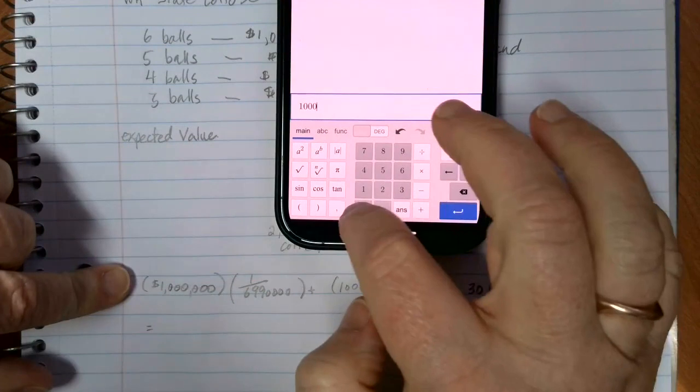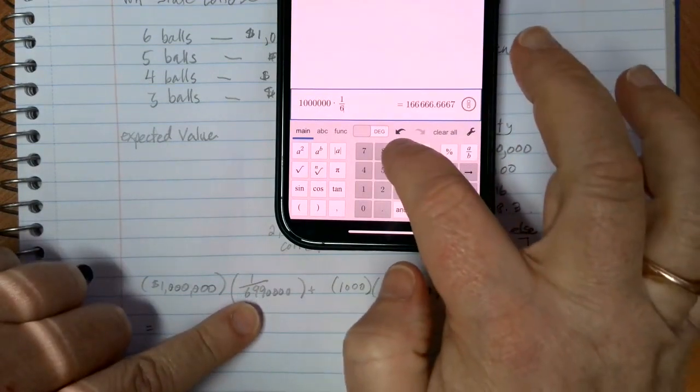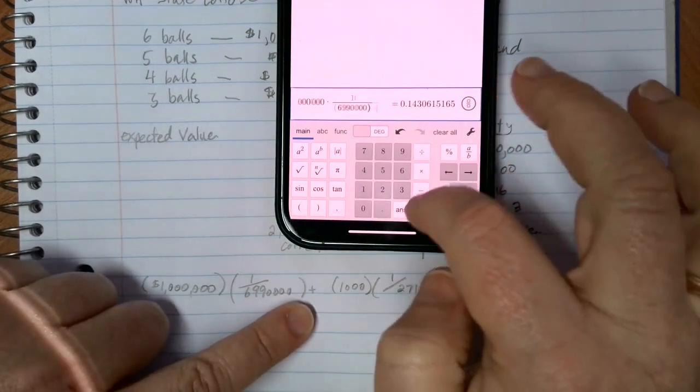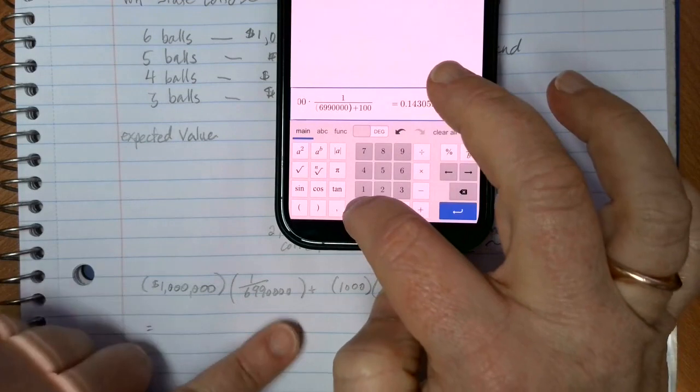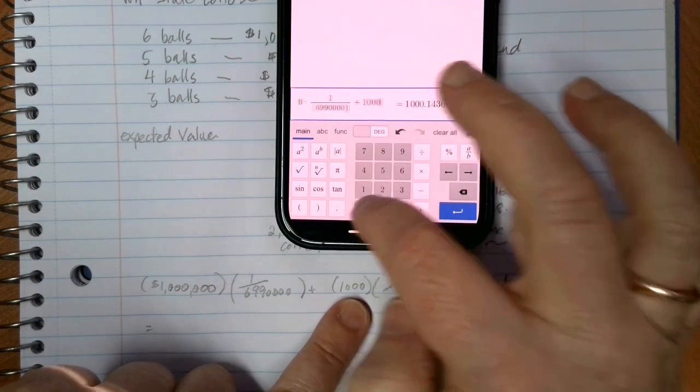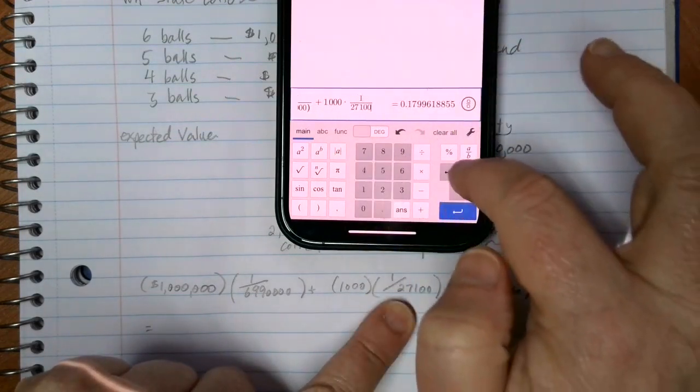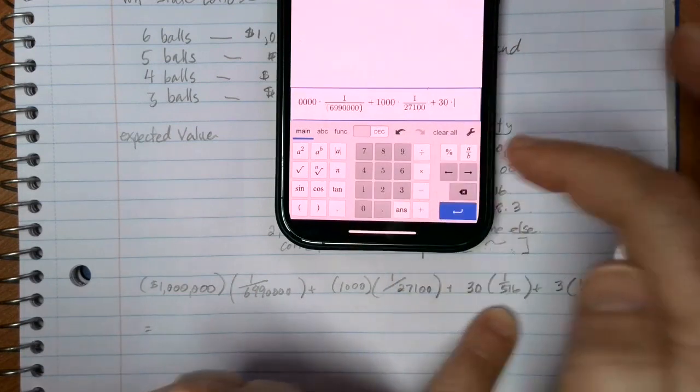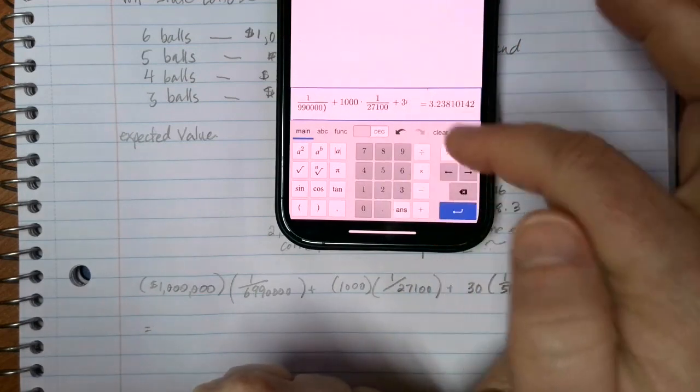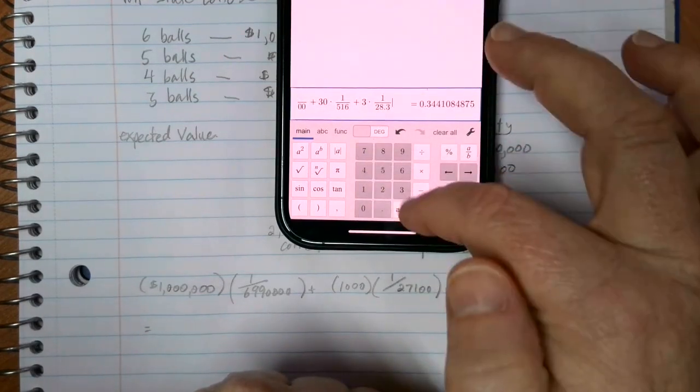So here we're going to have 1,000,000 times by 1 divided by 6,990,000, close that parentheses, plus 1,000 times by 1 divided by 27,100 plus 30 times 1 over 516 plus 3 times 1 over 28.3 plus 0.